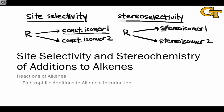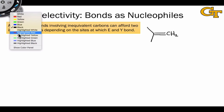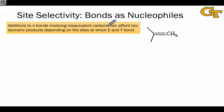In many electrophilic additions, one diastereomer is heavily favored over another for mechanistic reasons. The site selectivity issue in electrophilic addition becomes clear if we consider an asymmetrically substituted alkene — one with two different sets of substituents on the two carbons involved in the double bond. This is a general problem for any reaction that uses a pi bond as a nucleophile.